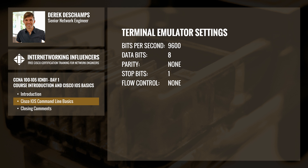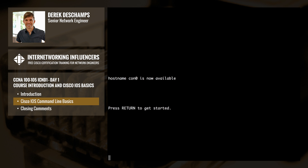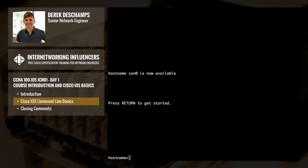Bits per second should be set to 9600. Data bits set to 8. Parity set to none. Stop bits set to 1. And flow control set to none. Once you've put those in correctly, hit enter, and you should see a command prompt similar to the following.